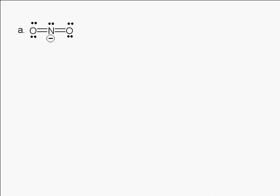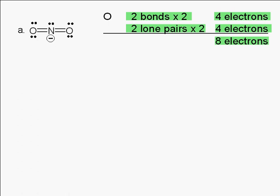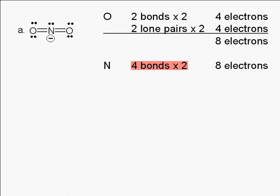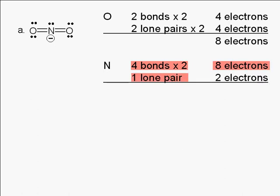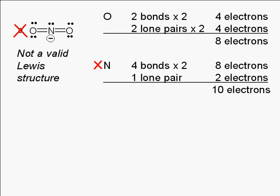We'll start with structure A. The oxygens in structure A both have two bonds giving four electrons and two lone pairs giving another four electrons, for a total of eight electrons — so the oxygens obey the octet rule. The nitrogen has four bonds giving eight electrons and one lone pair giving two more electrons for a total of ten electrons. The nitrogen violates the octet rule, so structure A is not a valid Lewis structure.